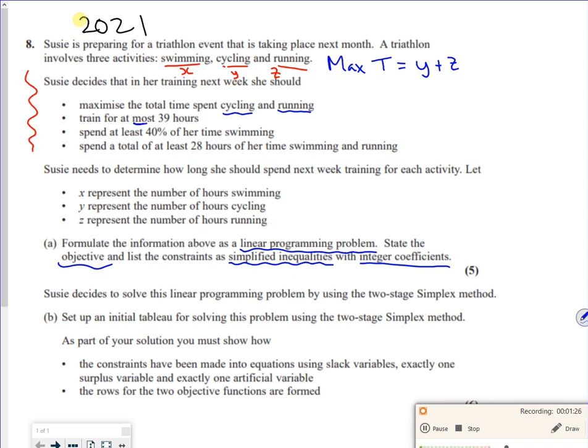It says train for at most 39 hours. So that's all of them together less than or equal to 39.